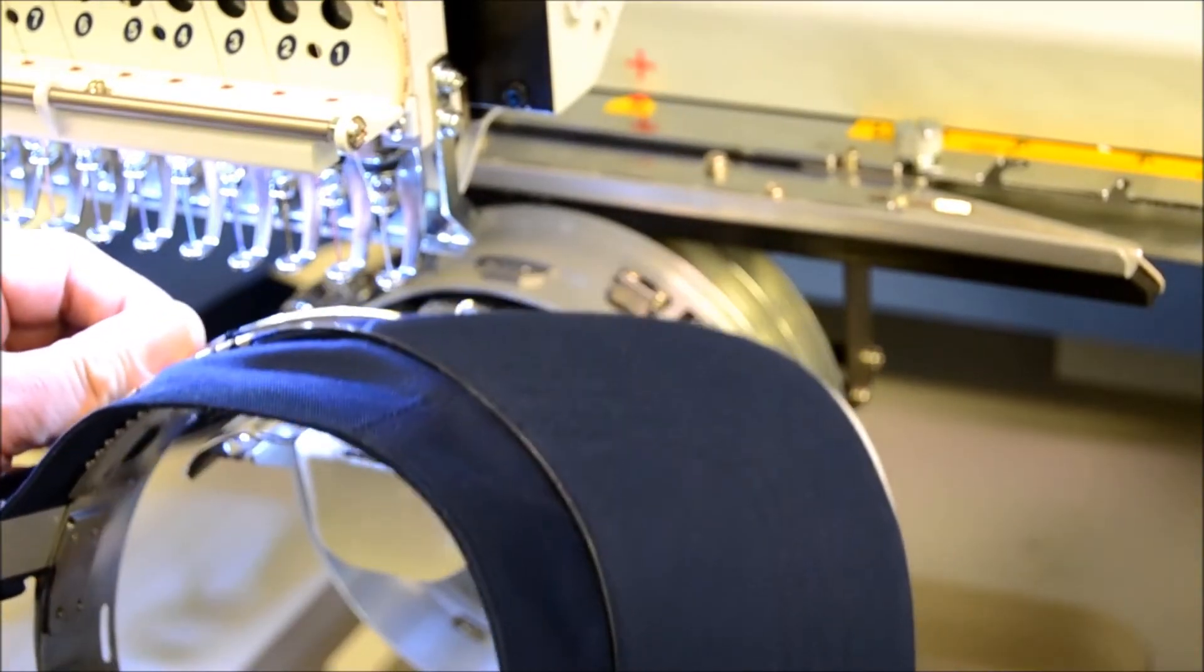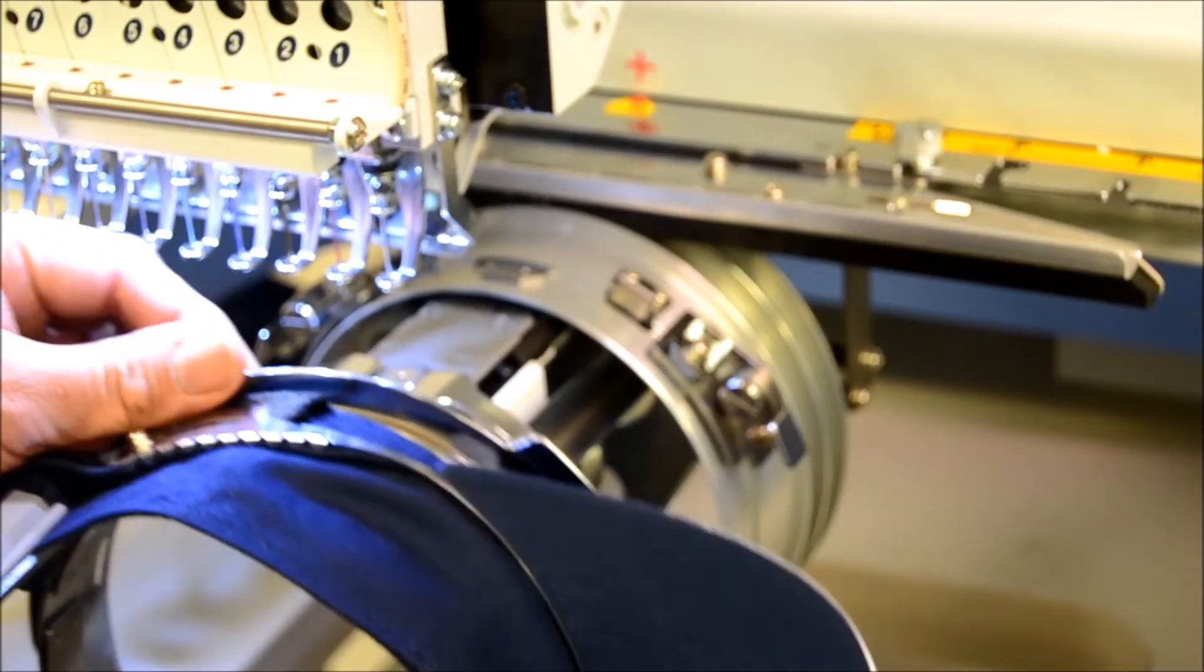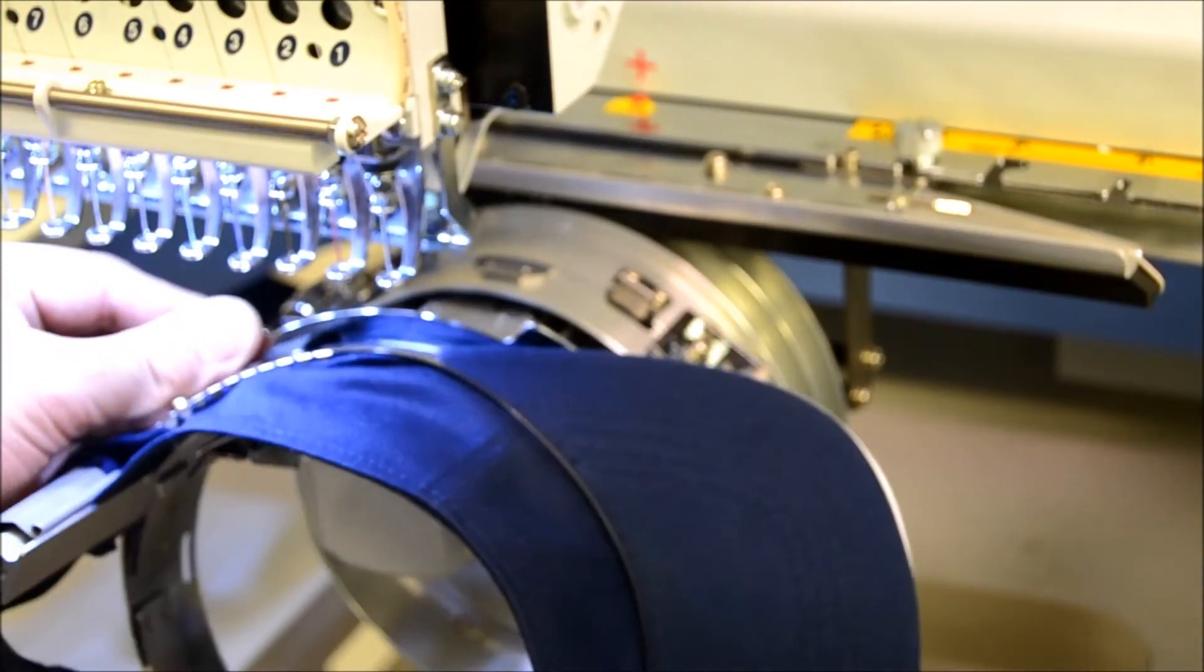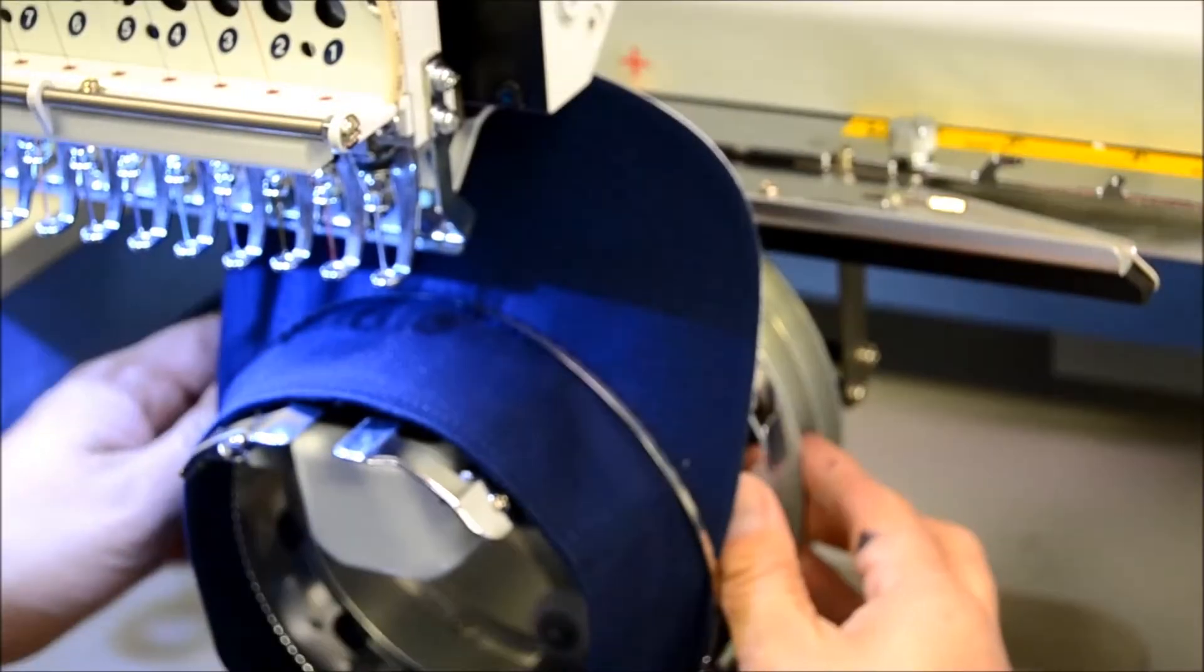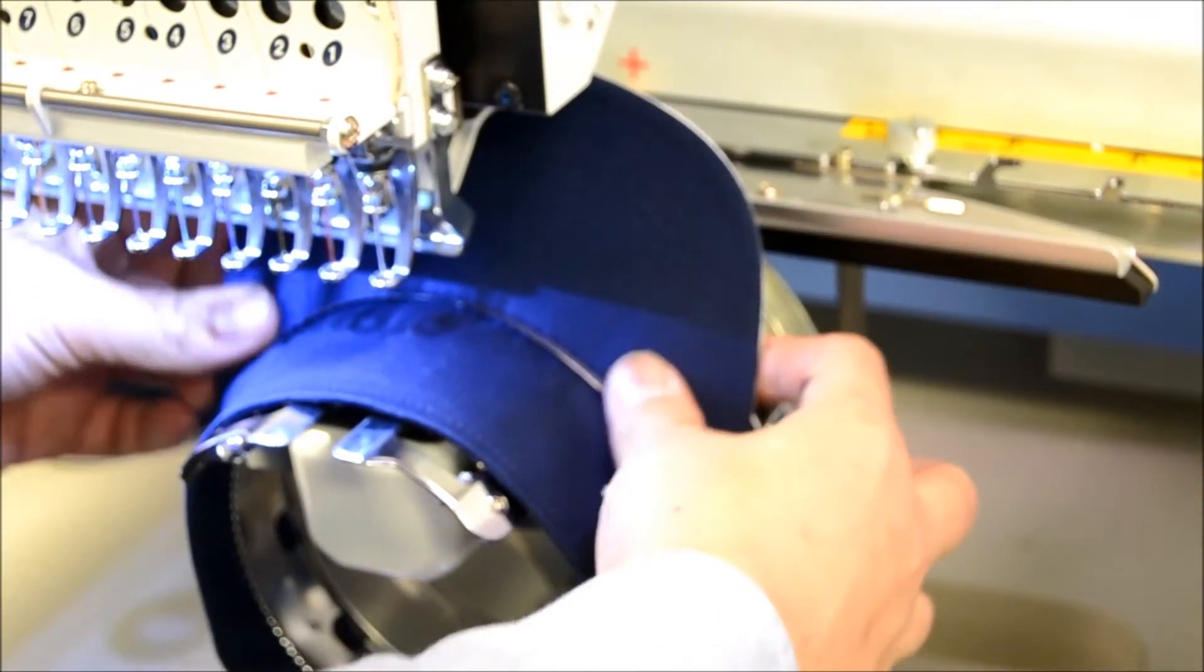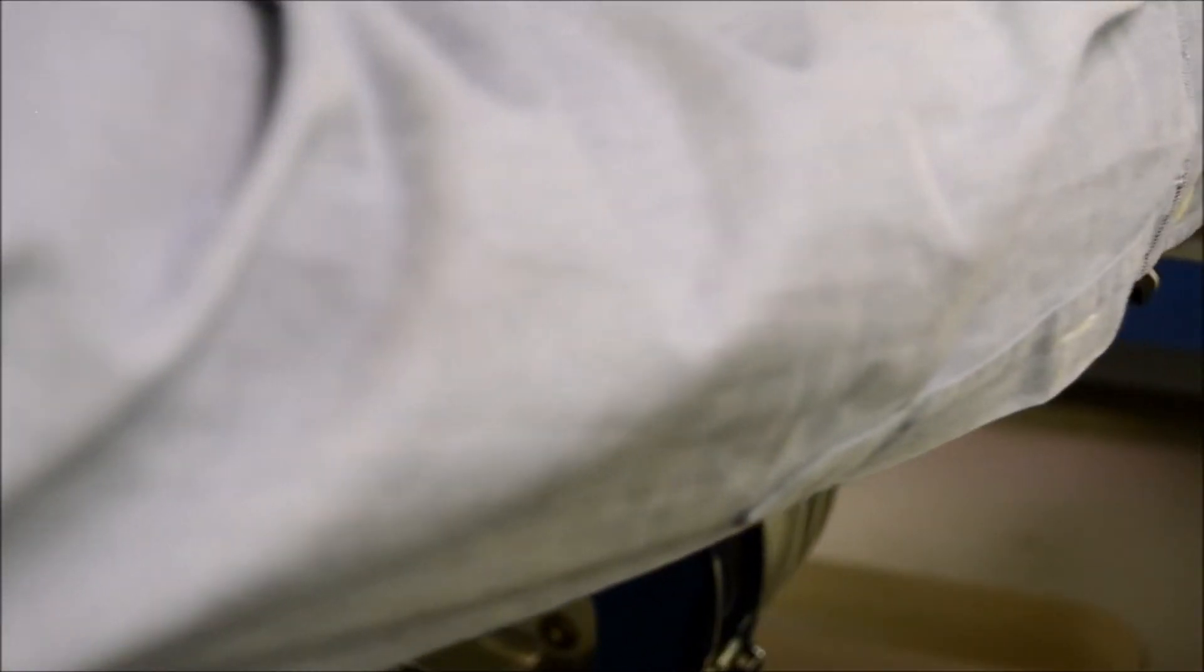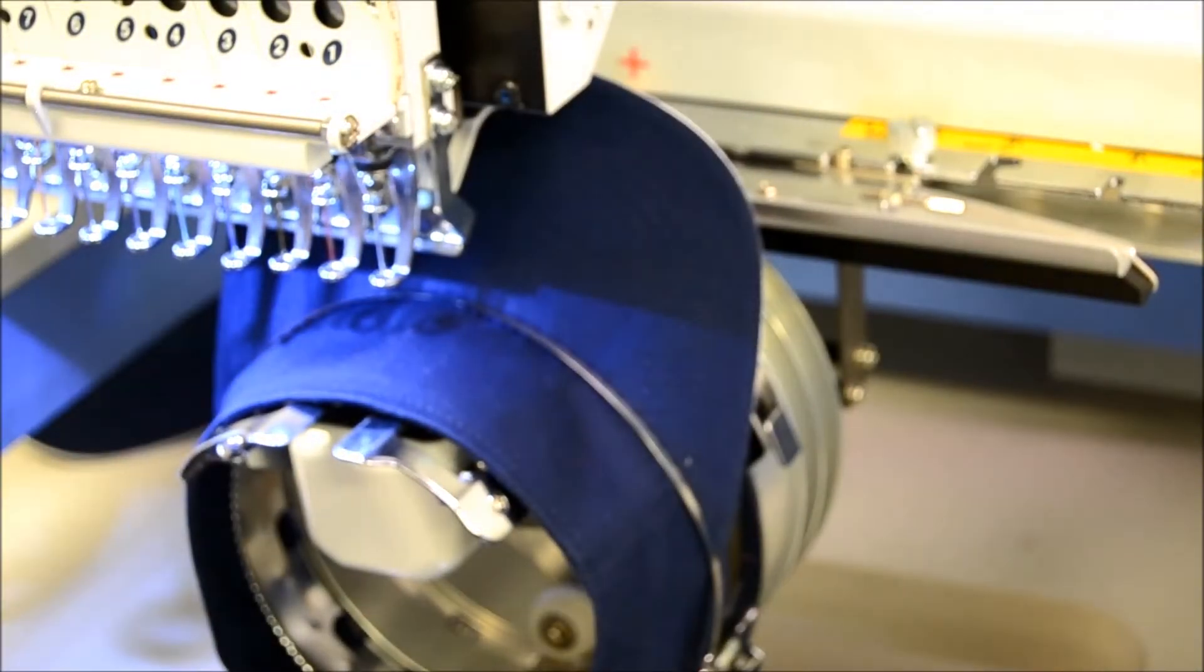Now placing the visor onto the machine onto the cap driver itself again pay special attention to making sure that this does not shift or push. So once it's firmly mounted onto the machine just double check behind the bill to make sure the bill is still sitting right on top of that bill stop.